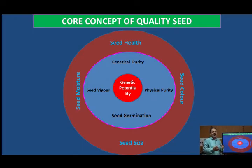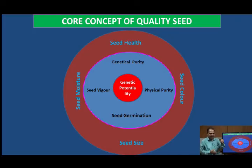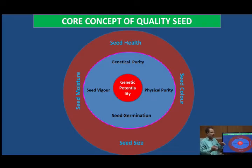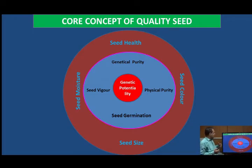Generally, crops are harvested in the field and at that time seeds contain little bit higher moisture content — 20 to 25%. But for storage purposes, seed moisture should be reduced to 8 to 12%, depending upon the longevity and storage period for which we are going to store the seeds. In that way, seed moisture is reduced.